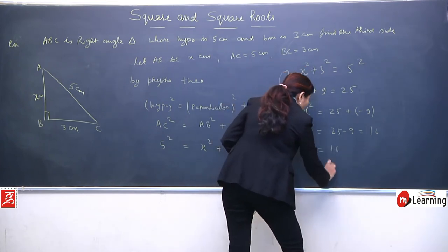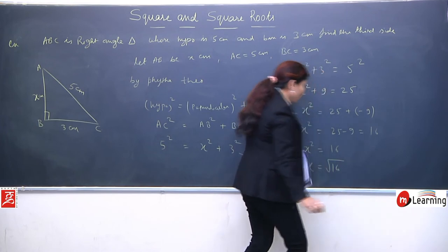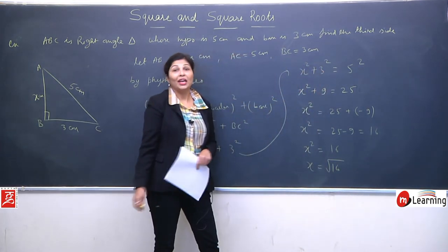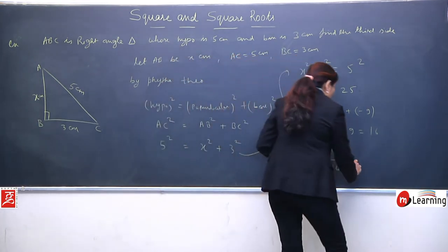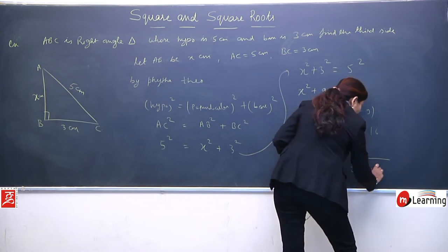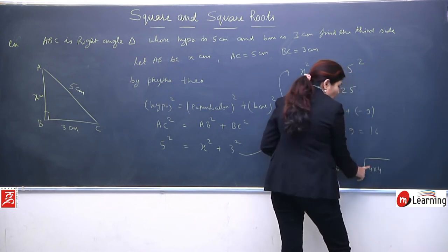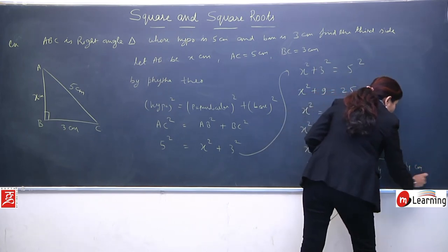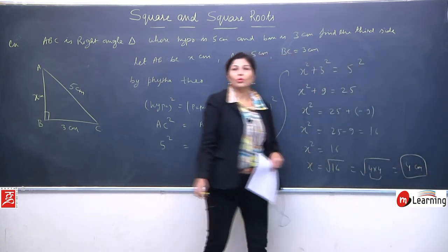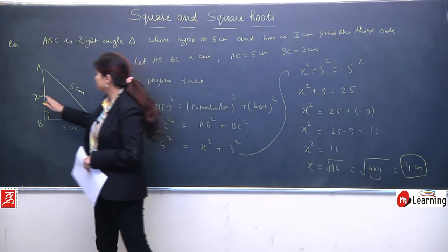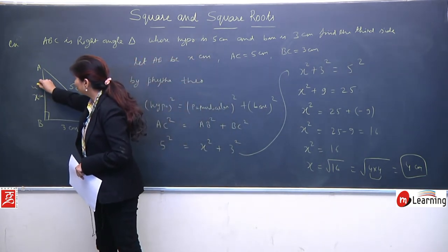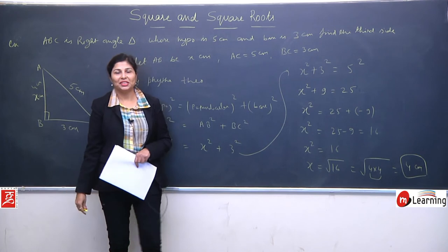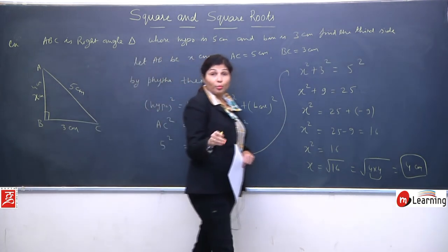We need to find x, means x square. 9 will go to the right hand side, so its additive inverse will happen, means it will convert to minus. The opposite of plus is minus. 25 minus 9 means 16. So now I have x square equals 16. Now we take square root, so x equals root 16. So what will we do? We already know, prime factorize. 4 into 4. And now these two 4s, one 4 will come out, which is 4 centimeters.